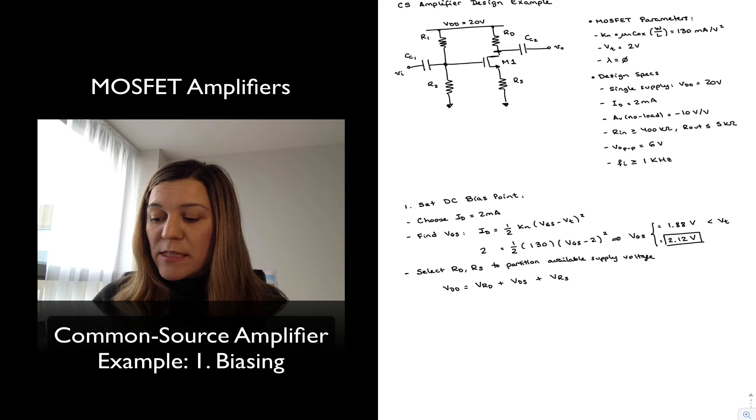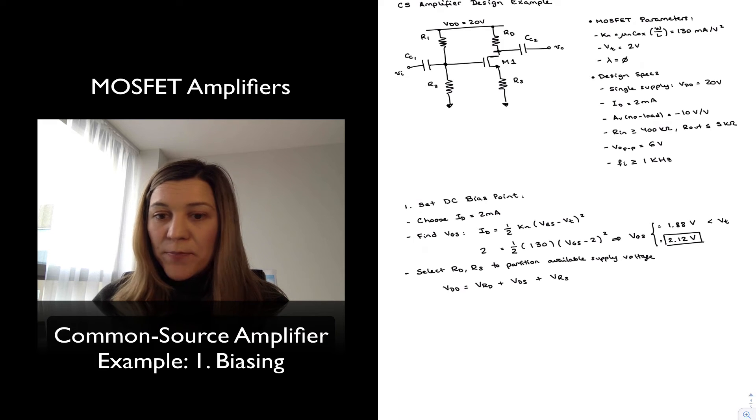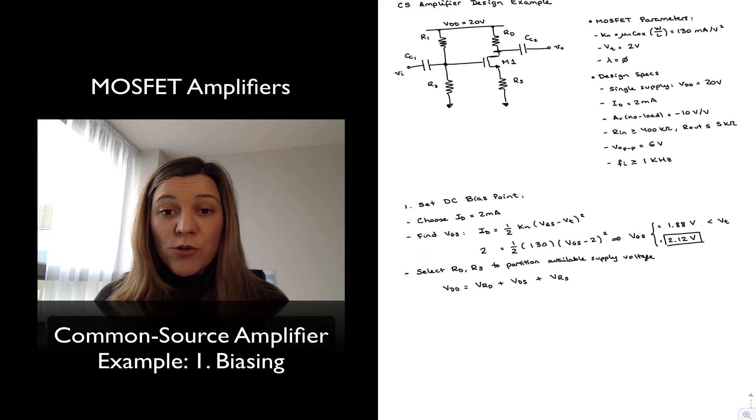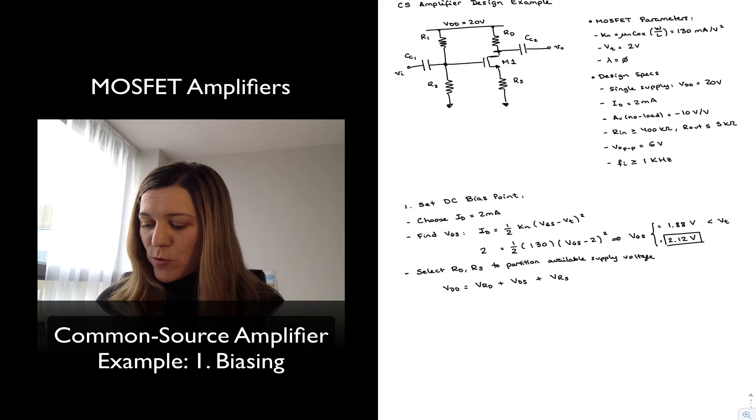Basically it just means the highest that my drain voltage can be is 3 volts below VDD or 17 volts. That's going to give me that the minimum voltage that I can associate with resistor RD is 3 volts in order to have that 6 volts peak-to-peak swing or plus minus 3 volts voltage swing at the output.